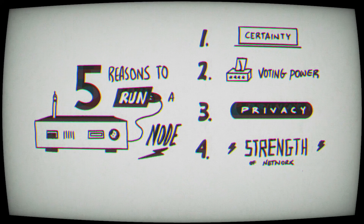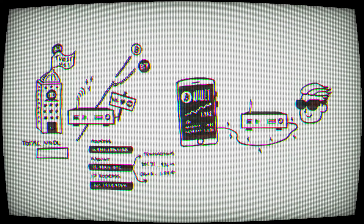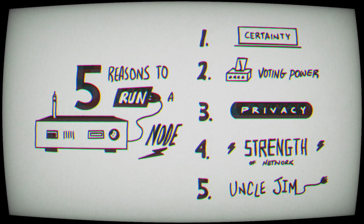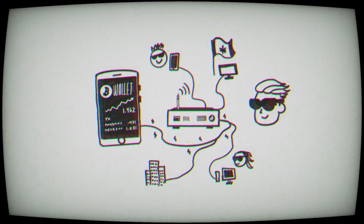Fourth is the strength of the network. Bitcoin exists through the nodes. If all nodes were shut down or destroyed, Bitcoin would no longer exist. This answers the age-old question of how Bitcoin could be shut down — the task would be to go to every single node and destroy it. Bitcoin would still exist as long as one node still has the history of the transactions and the rule sets of the protocol. You can help make the network more robust by adding a node. The fifth reason is what they call an Uncle Jim — you can be a node for your friends, family, business, and community.